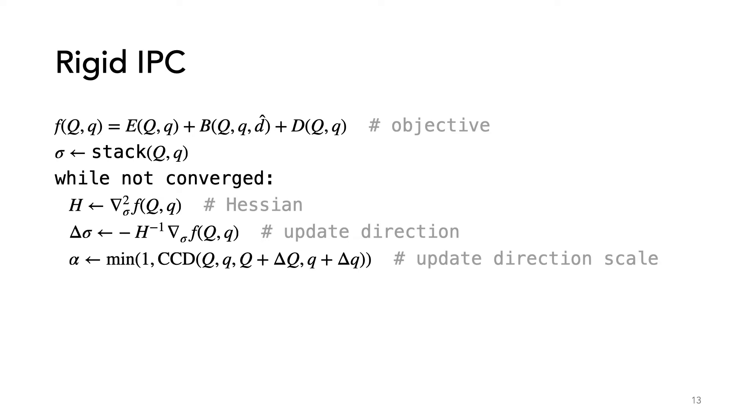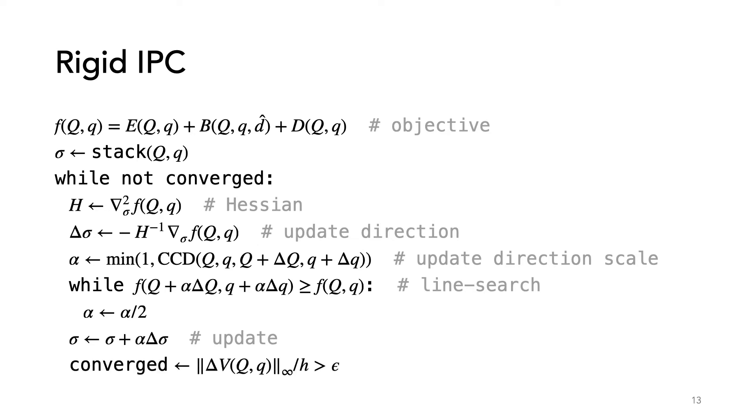Then we compute a maximum step length using CCD. Notice here that we're using CCD over the rotations and positions rather than the vertex position. Then we again use standard line search to find a decrease in our objective, update our variables, and check for convergence.